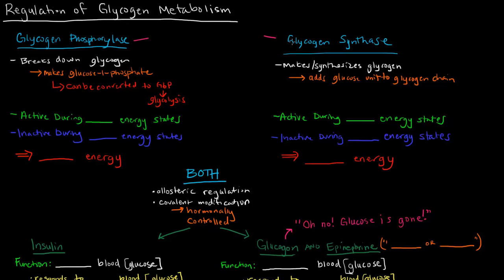These two enzymes do opposite things, and because of that, we would never want both of them to be active at the same time. We don't want to make glycogen and break glycogen at the same time — that would be counterproductive. So we want one to be active while the other is inactive.